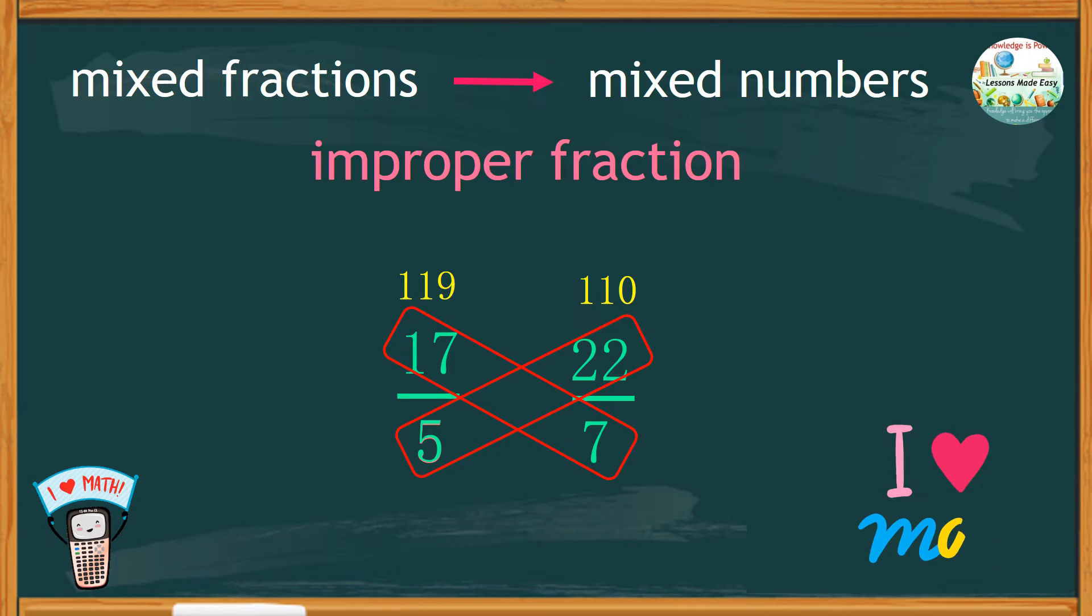Therefore, 17 over 5 is greater than 22 over 7.